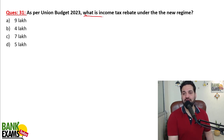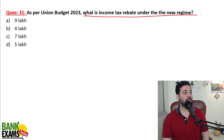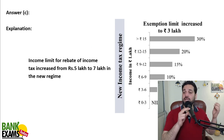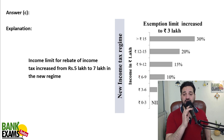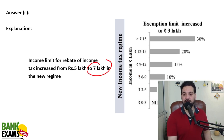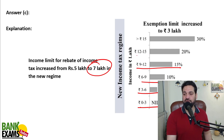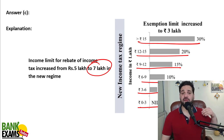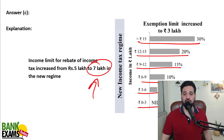As per Union Budget 2023, what is the income tax rebate under the new tax regime? It used to be 5 lakhs but now it is 7 lakhs. Tax slabs under the new regime: 0–3 lakh nil, 3–6 lakh 5%, 6–9 lakh 10%, 9–12 lakh 15%, 12–15 lakh 20%, above 15 lakhs 30%. Most taxpayers are going to adopt the new tax regime. The exemption limit is 7 lakh under the new tax regime.